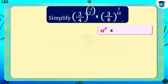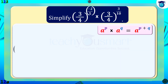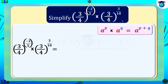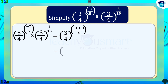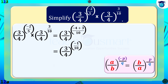Third example uses a raised to p multiplied by a raised to q equals a raised to p plus q. Three by four whole raised to minus 2 by 5 multiplied by three by four whole raised to 3 by 10 equals three by four whole raised to minus 2 by 5 plus 3 by 10, equals three by four whole raised to minus 4 plus 3 divided by 10, equals three by four whole raised to minus 1 by 10. In the case of exponential numbers, if the exponents are negative, to make it positive take the reciprocal of the base. That is, three by four whole raised to minus 1 by 10 equals four by three whole raised to 1 by 10.